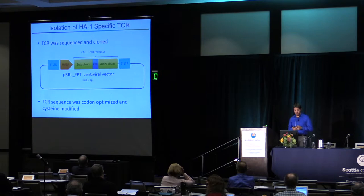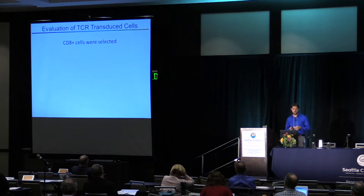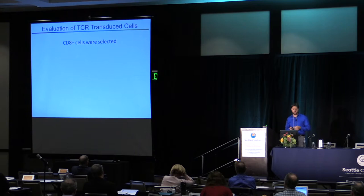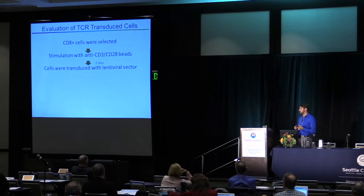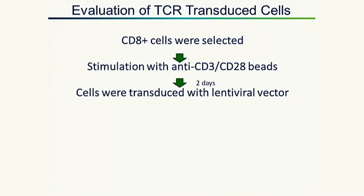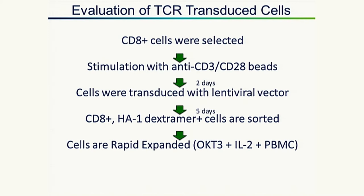We isolated the T-cell receptor sequence and cloned it into a lentiviral vector. This vector was codon-optimized to maximize expression and was modified to minimize mispairing and maximize correct pairing. To evaluate our TCR, we selected CD8-positive cells, stimulated them with anti-CD3 and CD28 beads, and after two days transduced them with the lentiviral vector. After five days, we sorted CD8-positive, HA1 dextramer-positive cells and rapidly expanded them using a rapid expansion protocol for ten days before using them in functional assays.